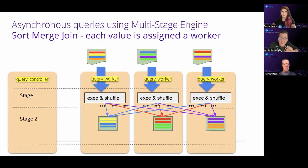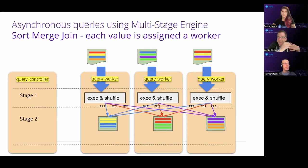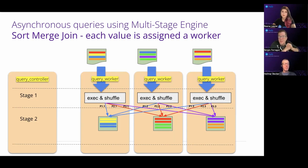MSQ also supports a sort-merge join. Instead of broadcasting all rows, you organize rows by the join column. For a join on user ID between clicks and users, you read users and distribute them evenly across workers by user ID — depicted by color, each color representing a different user ID. The same operation is done on clicks, so matching user IDs end up on the same worker and can be joined locally. MSQ supports both broadcast joins and sort-merge joins.